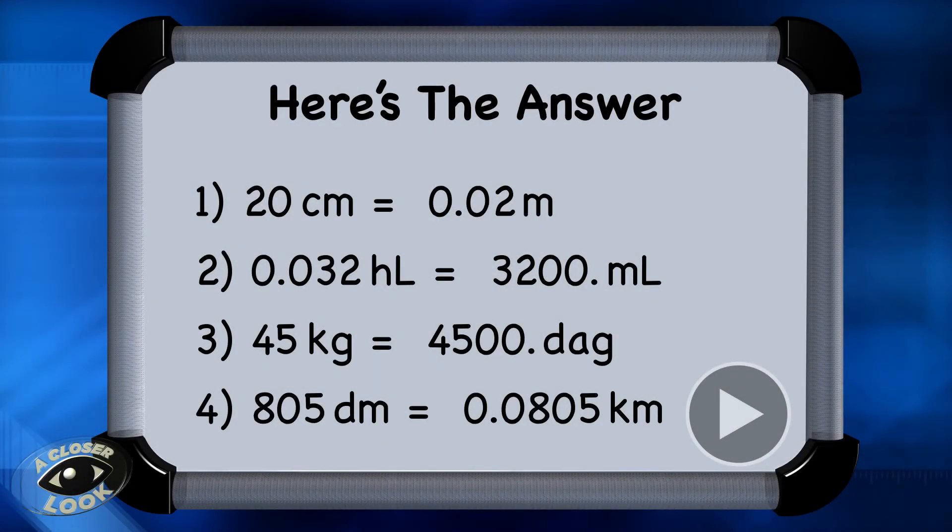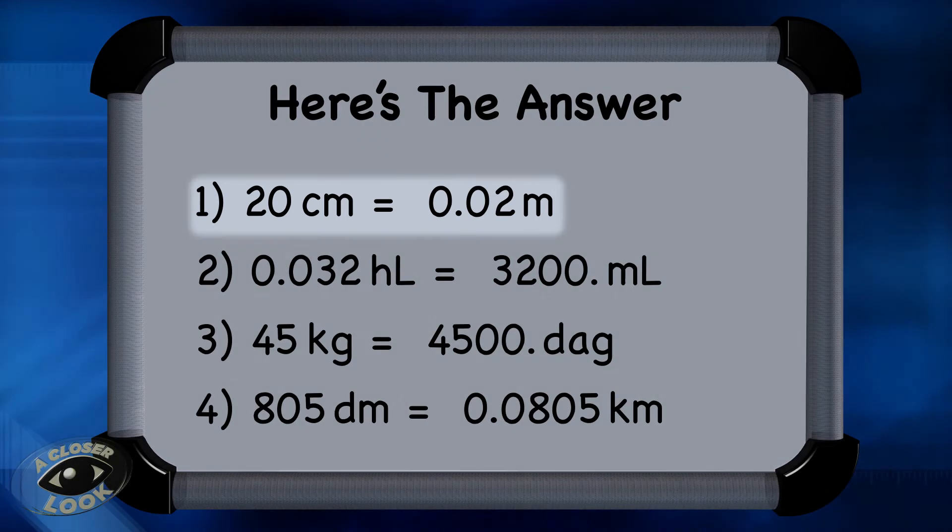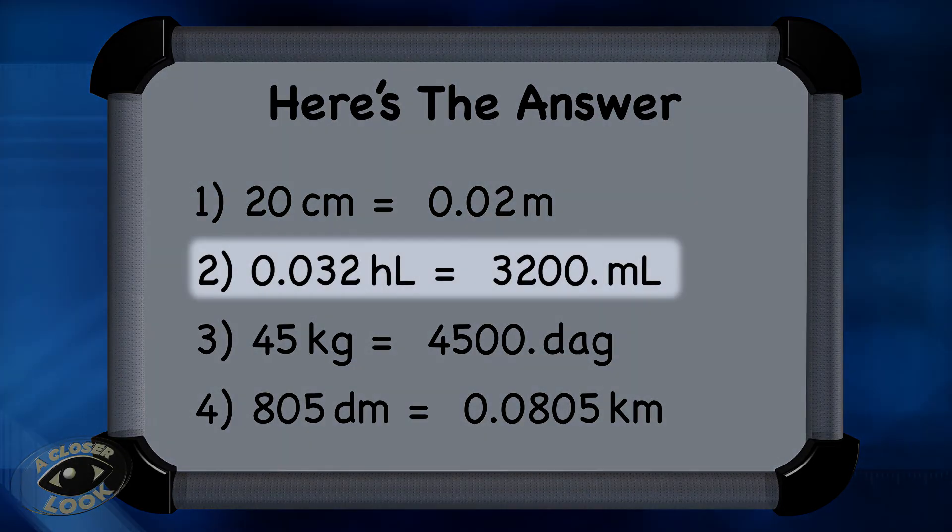Ready to see if you got them right? For the centimeters to meters, the correct answer is 0.02 meters, which we got by sliding the decimal three places to the left. For hectoliters to milliliters, the correct answer is 3,200 milliliters, which we arrived at by moving the decimal five places to the right.